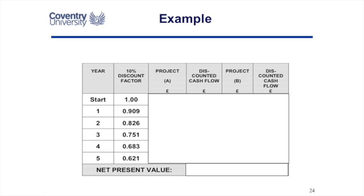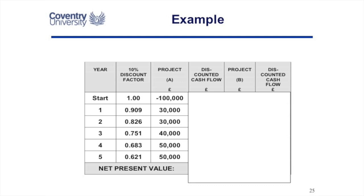Let's look at an example. We've got a project with a five-year life. We're going to invest in this project and it's going to have income in years one, two, three, four, and five, discounting the profit coming in to do a net present value. The start year — today — has a discount factor of one. We're going to invest £100,000 now, with forecast profit of £30,000 in year one, £30,000 in year two, £40,000 in year three, and £50,000 in years four and five.